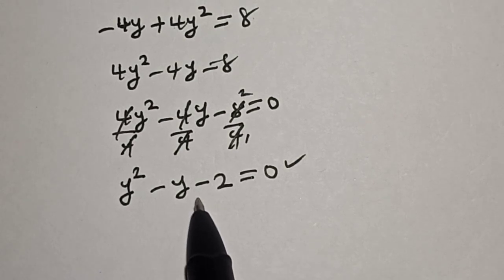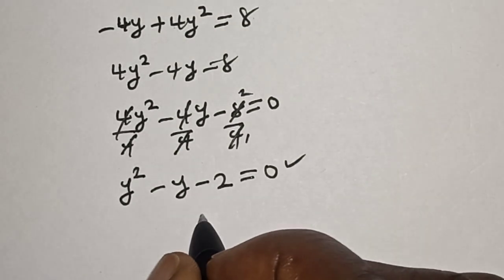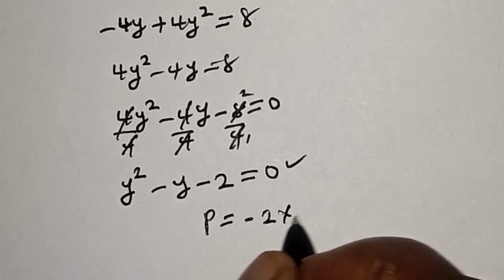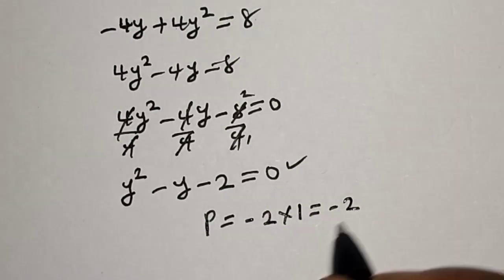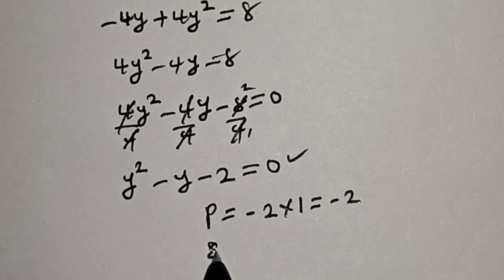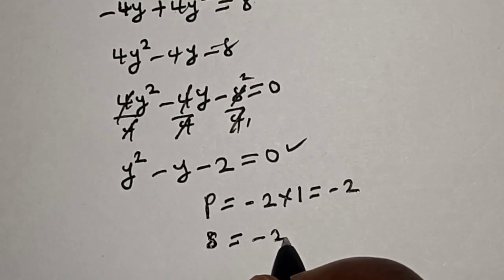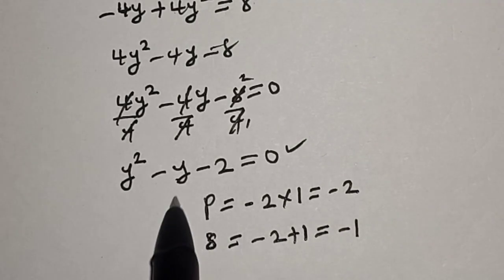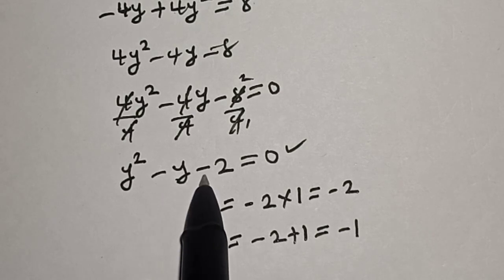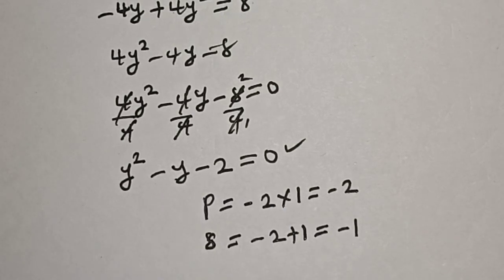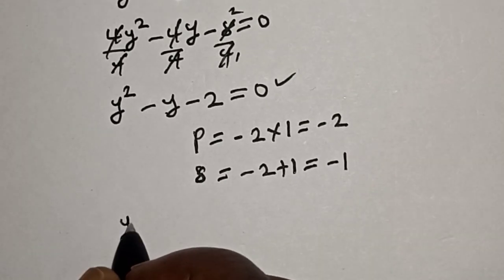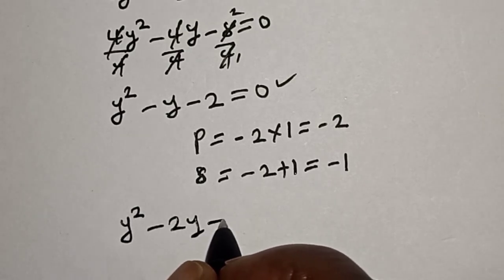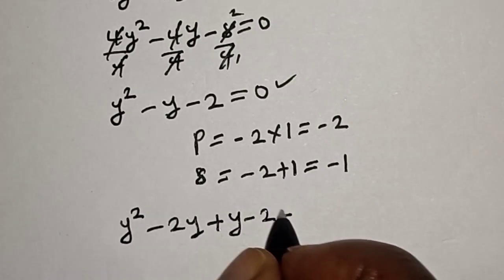In this case let's use the factorization method. The product is minus 2 multiplied by 1, which equals minus 2, and the sum is minus 2 plus 1, which equals minus 1 — the coefficient of y. Substituting, we have y² minus 2y plus y minus 2 is equal to 0.